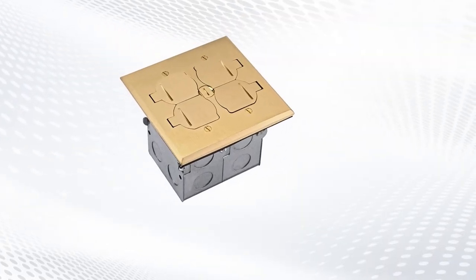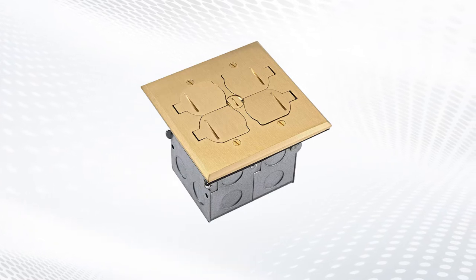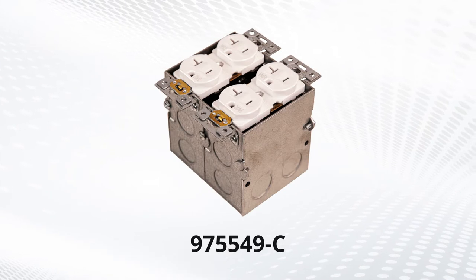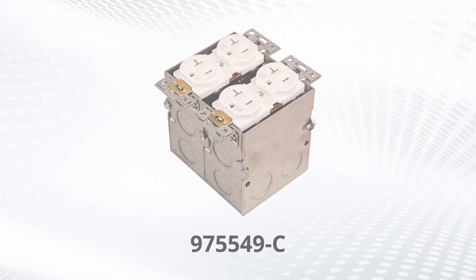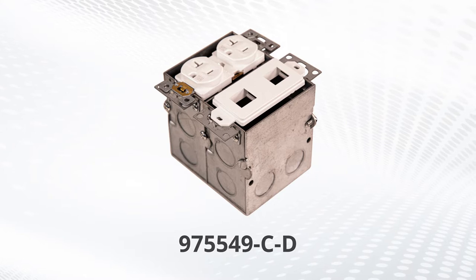The 975549 Floor Box comes in two different versions depending on your power and or data needs. One version includes two self-grounding, 20-amp tamper and weather-resistant receptacles. The other comes with one receptacle and one two-port Datacom module.